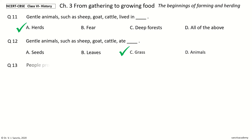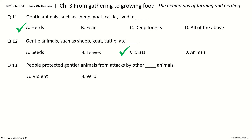Question 13. People protected gentler animals from attacks by other what animals. The options are: violent; wild; faster; stronger. And the answer is wild.